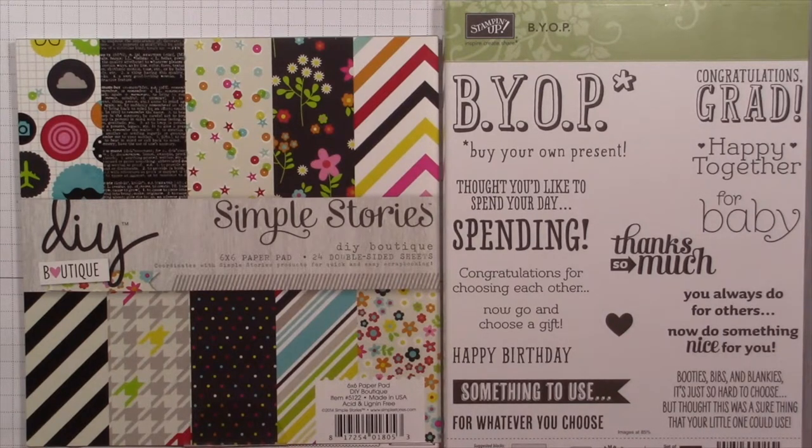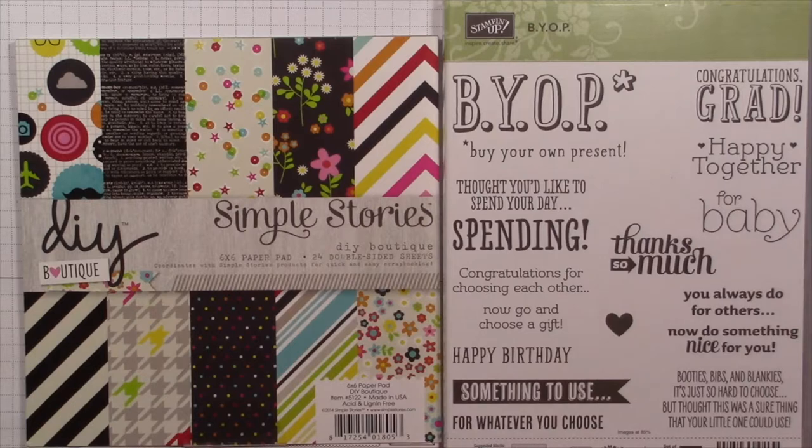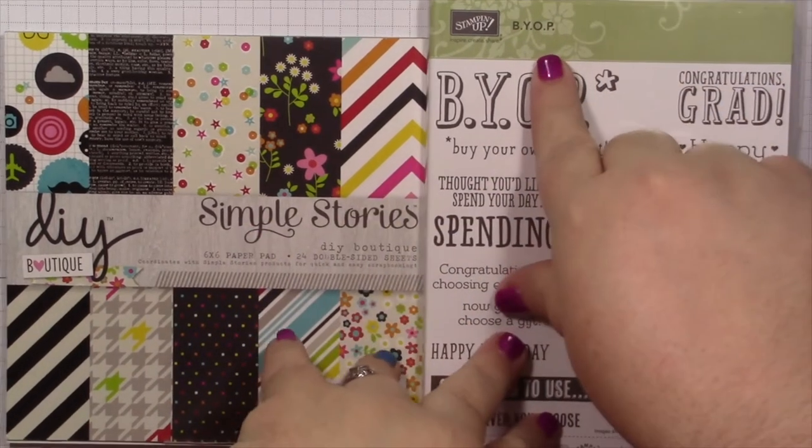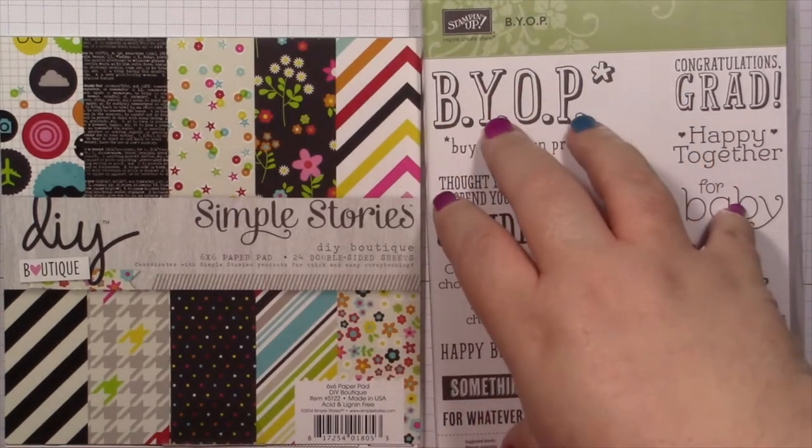It happens to be my birthday today, so instead of doing a coloring video, I'm going to make a birthday card. The birthday card is not going to be for me because that would be kind of weird, but my niece has a birthday next month. I mentioned her in yesterday's video, so I want to go ahead and get her card ready to go. I'm going to be using the BYOP stamp set from Stampin' Up.